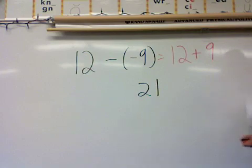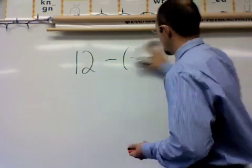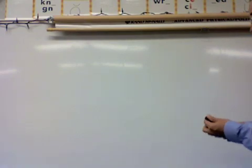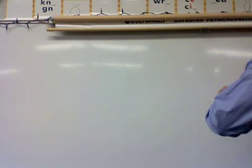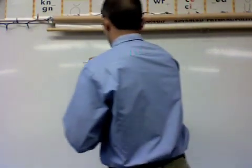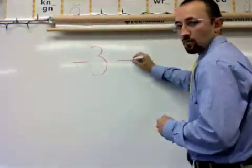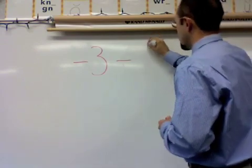We're going to look at one more now and I'm going to follow the same steps where I do the opposite operation, so I'm going to be adding the opposite of my integer on the right. Let's say this time we have negative 3 minus a negative 5.